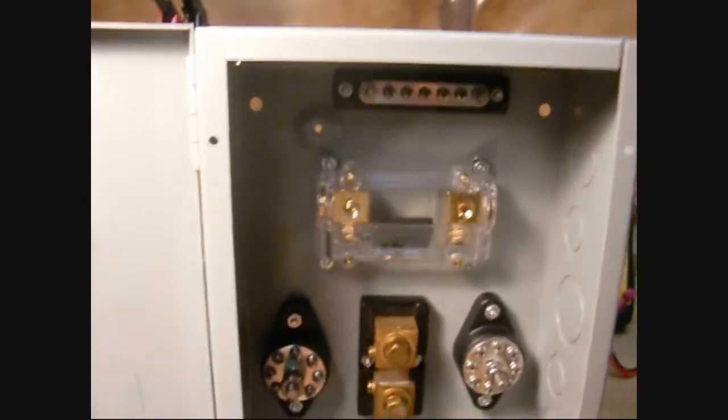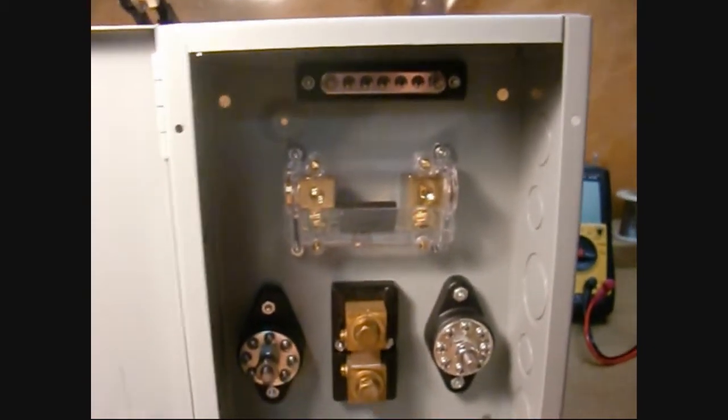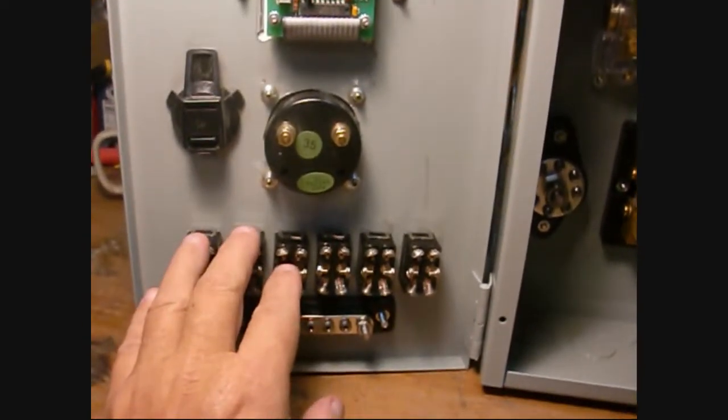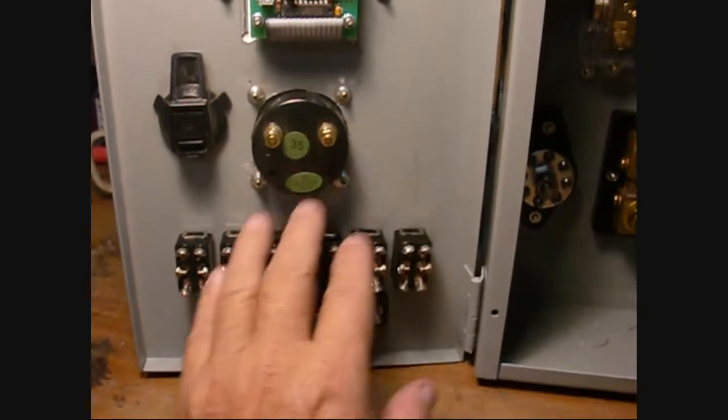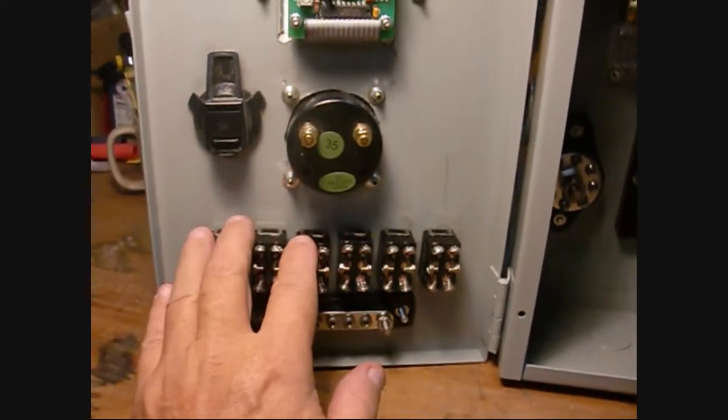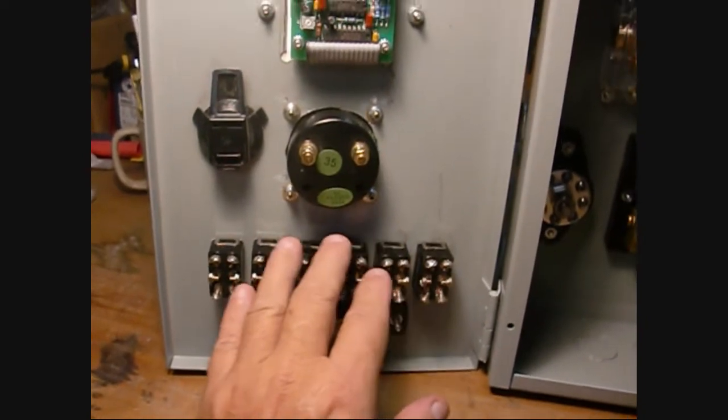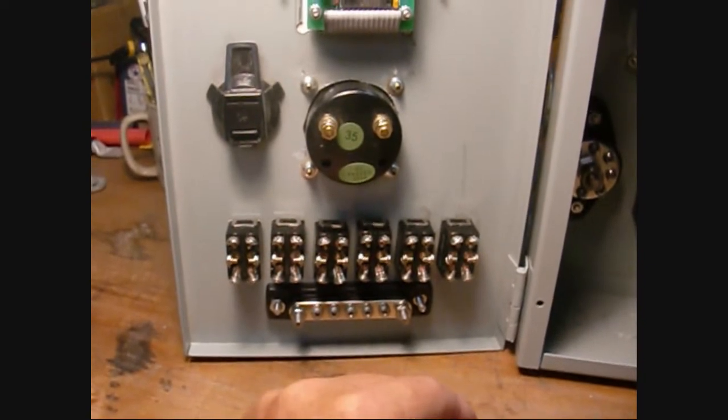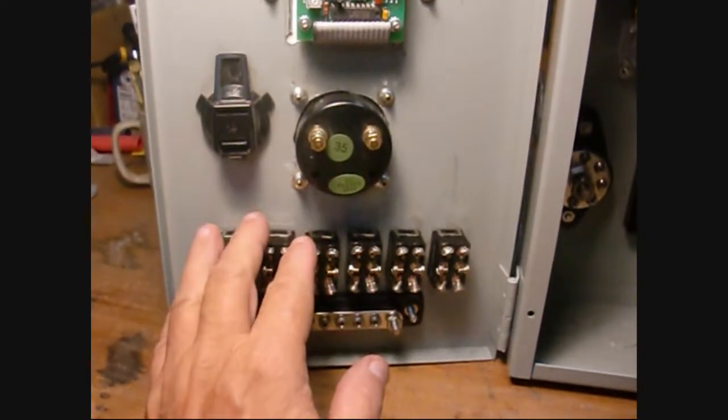This will give me the ability to select which solar panels I'm going to use for charging my batteries and which ones I'm going to use to feed the grid. There are some times where the sun is such that I want to manually control how much is going to the battery versus the grid.